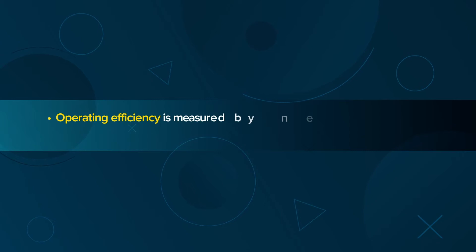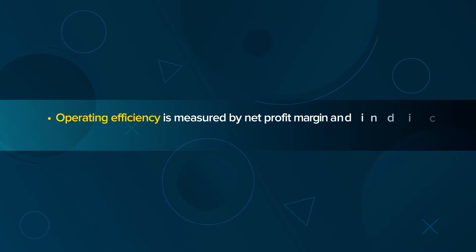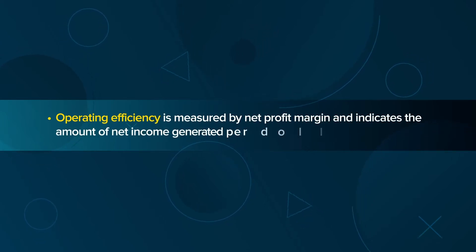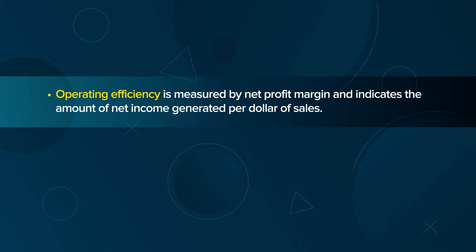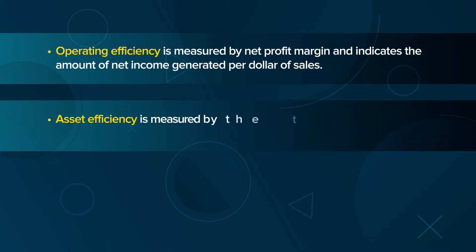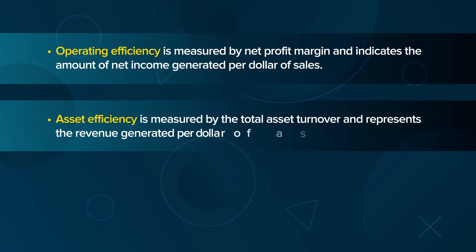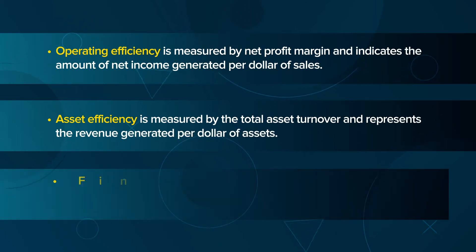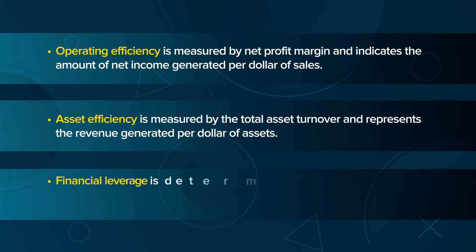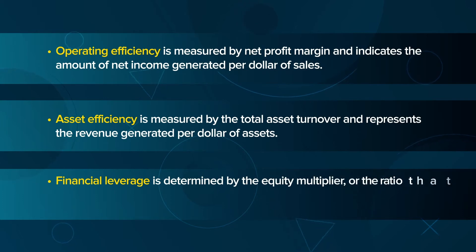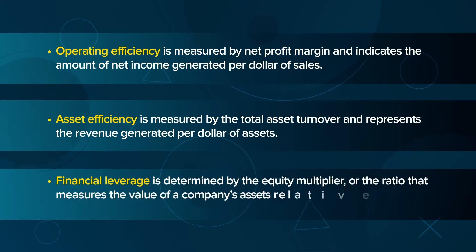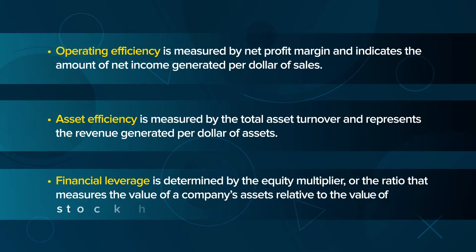Operating efficiency is measured by net profit margin and indicates the amount of net income generated per dollar of sales. Asset efficiency is measured by the total asset turnover and represents the revenue generated per dollar of assets. Financial leverage is determined by the equity multiplier, or the ratio that measures the value of a company's assets relative to the value of stockholders' equity.